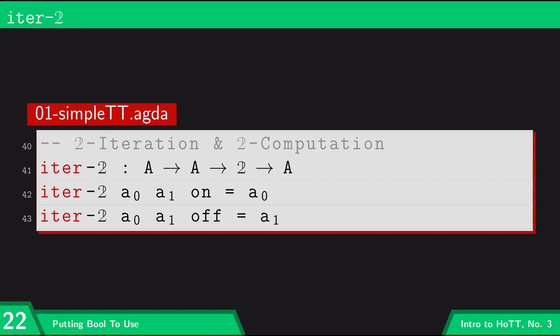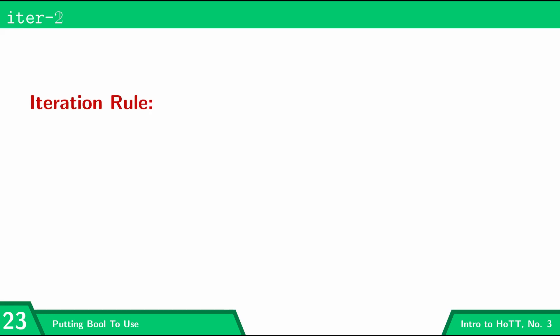So that's iteration with bools. I wrote in a comment 'bool iteration and bool computation' — these are two steps we have to do whenever we're defining a new type. In Agda we do this in one go, but in the deductive system these are actually separate rules. The iteration rule says that I can use iter-bool to form terms: if 'a0' is a term of type 'a', 'a1' is a term of type 'a', and 'b' is a term of type bool, then I can form 'iter-bool a0 a1 b' as a term of type 'a'.